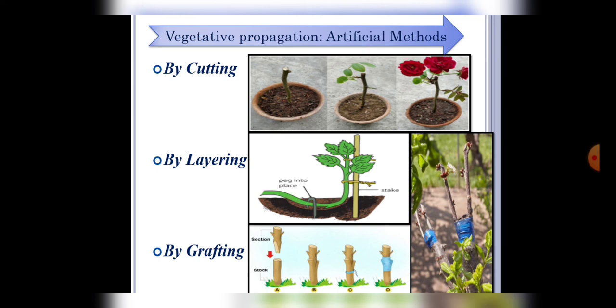So this was all about vegetative propagation, which is very important subtype of asexual reproduction in plants.